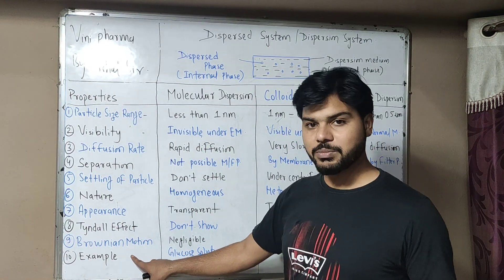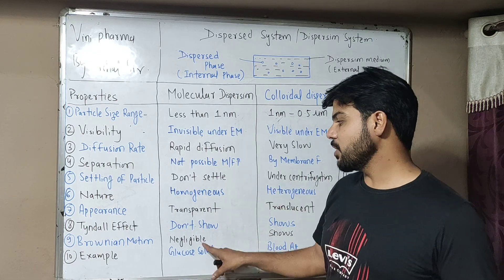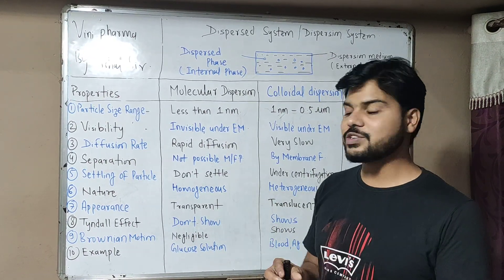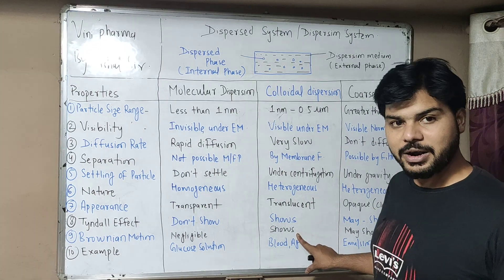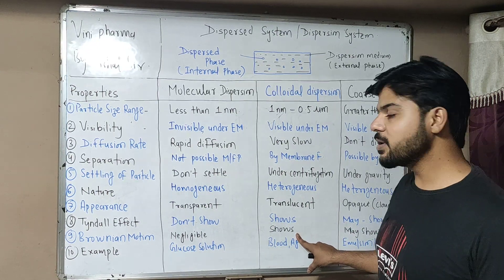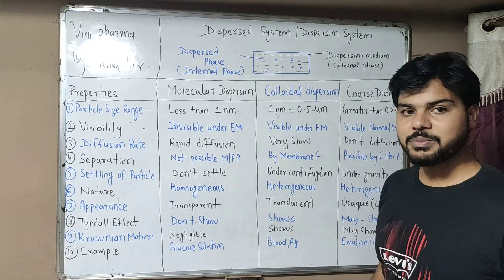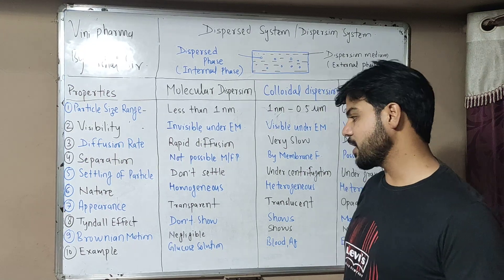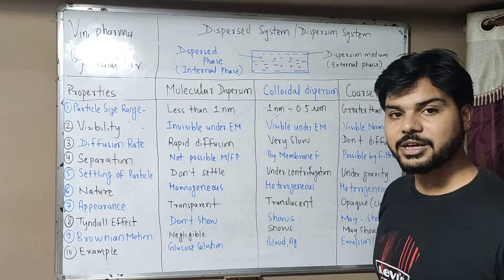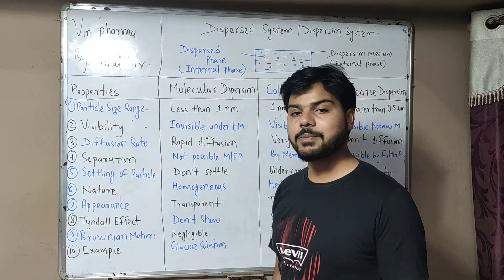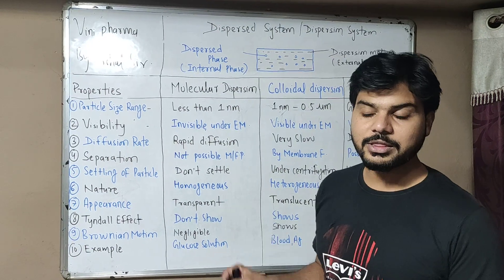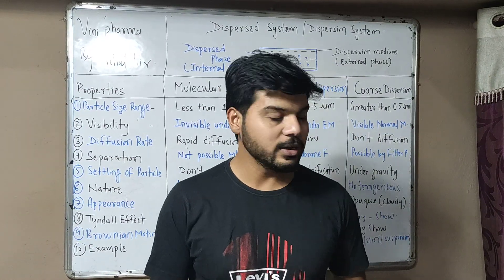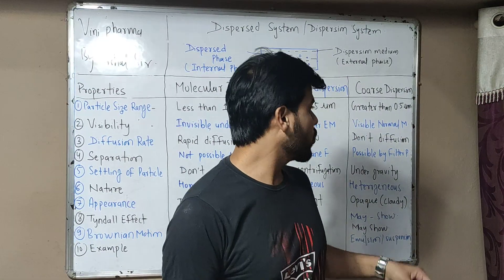Now we talk about Brownian movement. In molecular dispersion, Brownian movement is negligible. Colloidal particles show Brownian movement — a zig-zag motion. Coarse dispersion has negligible Brownian movement due to large particle size. Examples: molecular dispersion includes glucose solution; colloidal dispersion includes blood, silver, and gold colloids; coarse dispersion includes suspensions and emulsions.